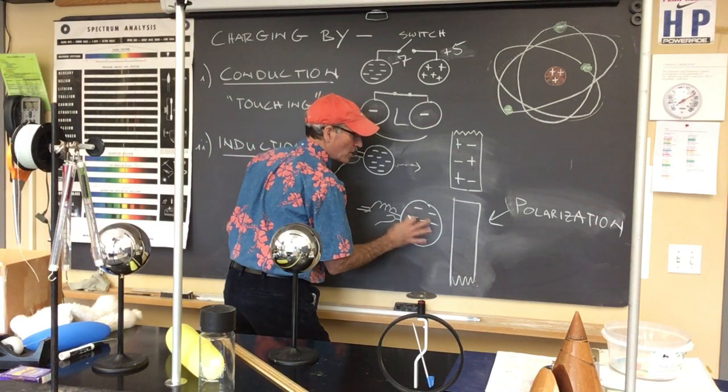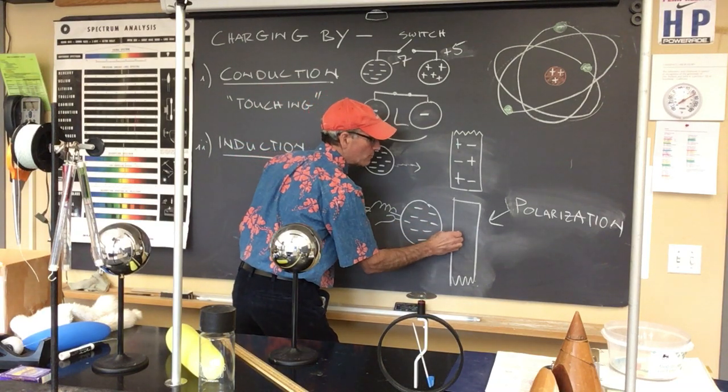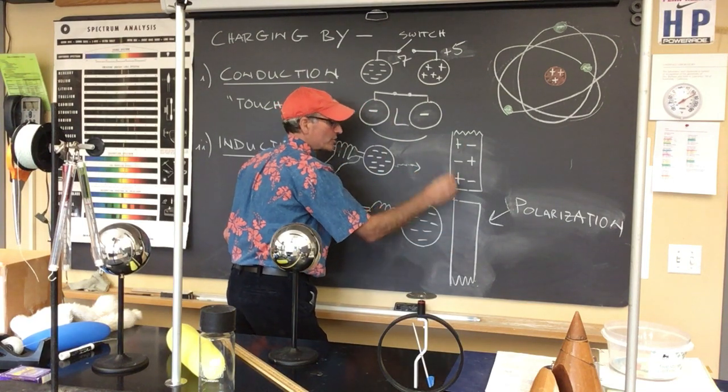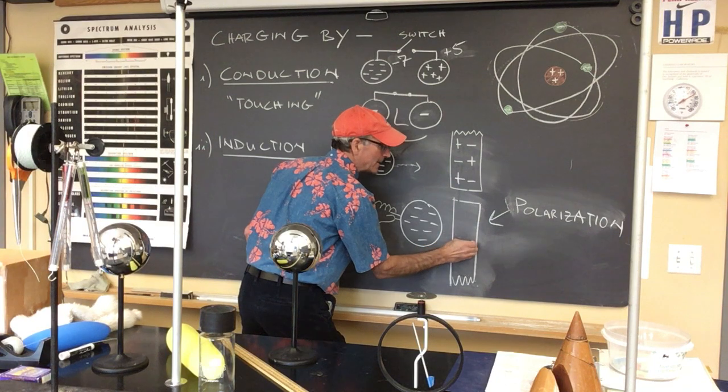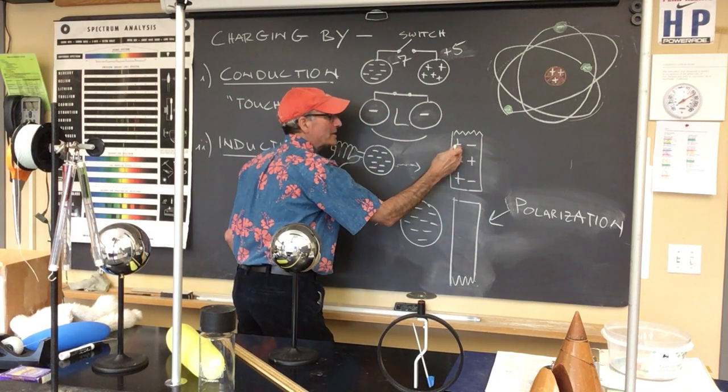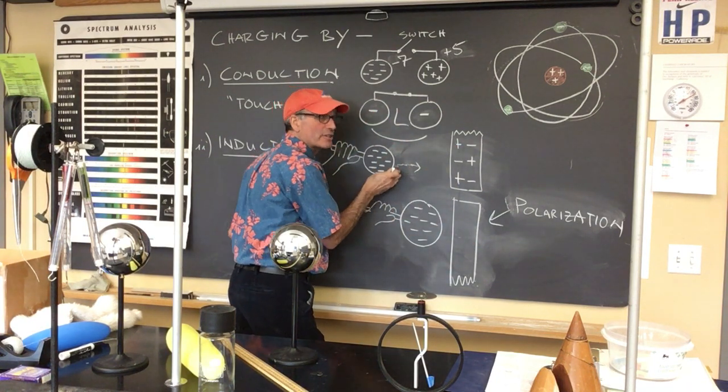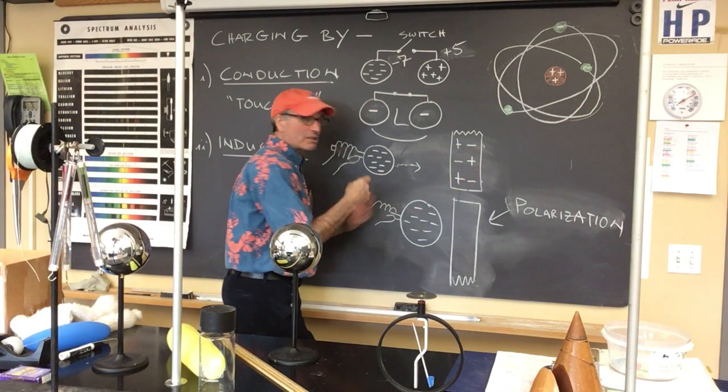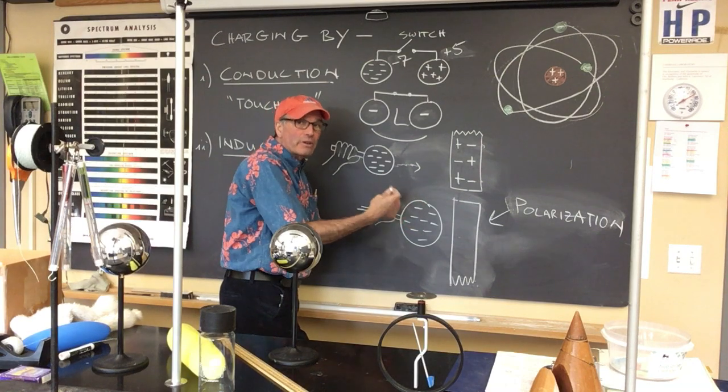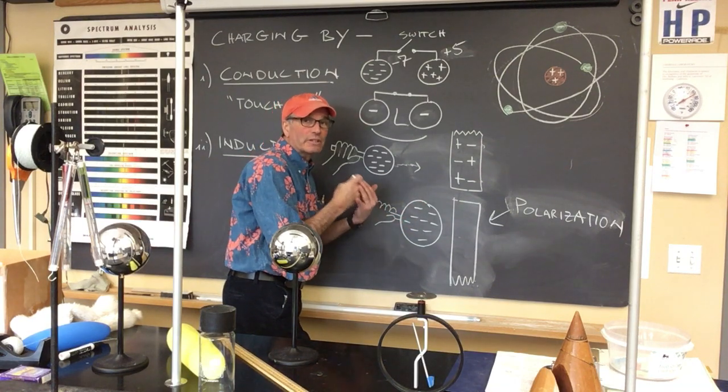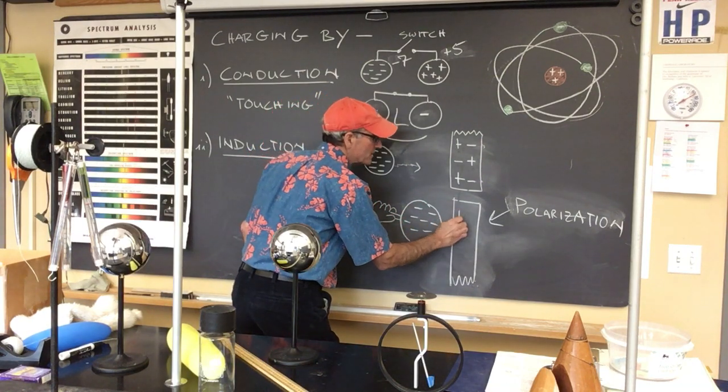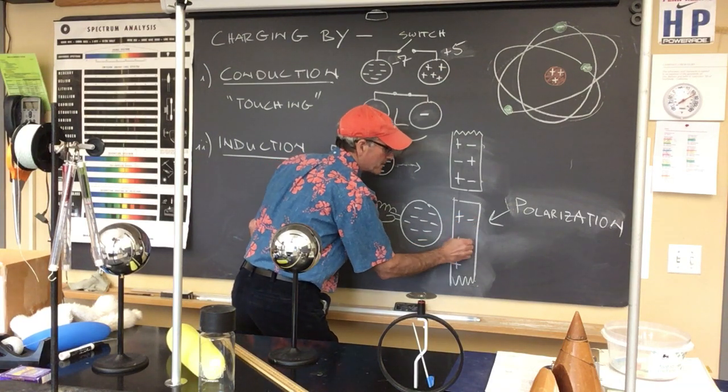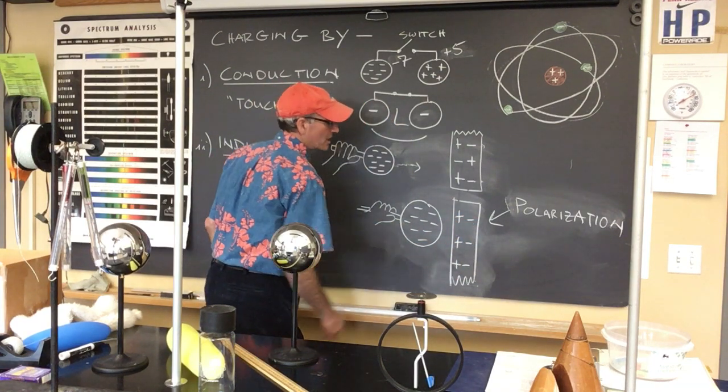The negatively charged object will repel the negative charges that are close and push them a little bit to the right, while maintaining the positive charges that are near the negatively charged object. And the negative charges that are to the right in the diagram are going to be, again, shifted a little bit to the right. And you end up with this arrangement of charges near that negatively charged conductor.